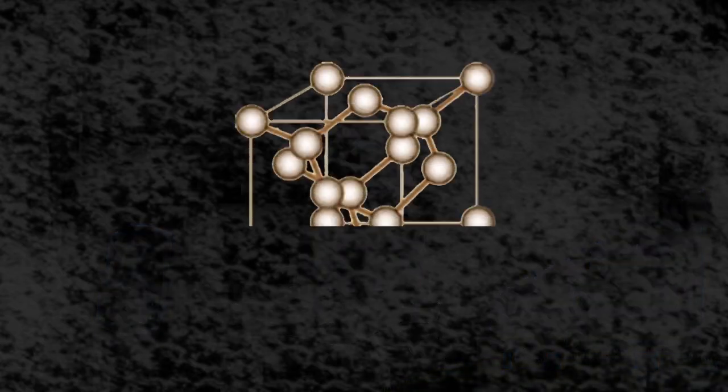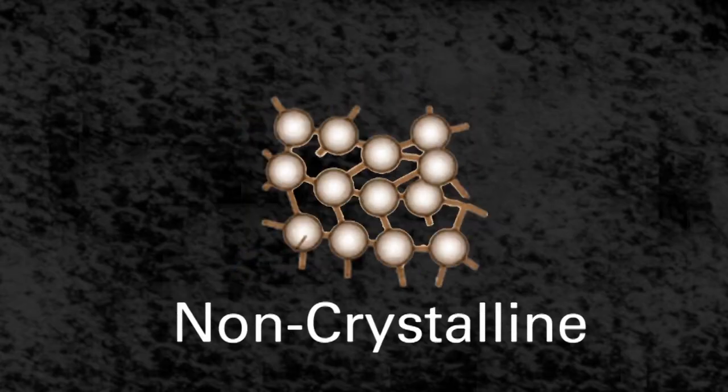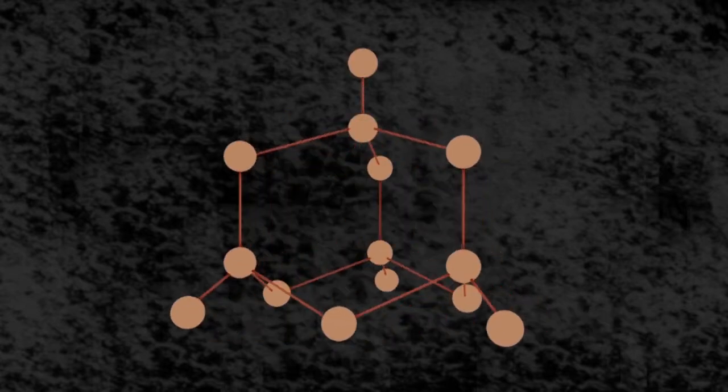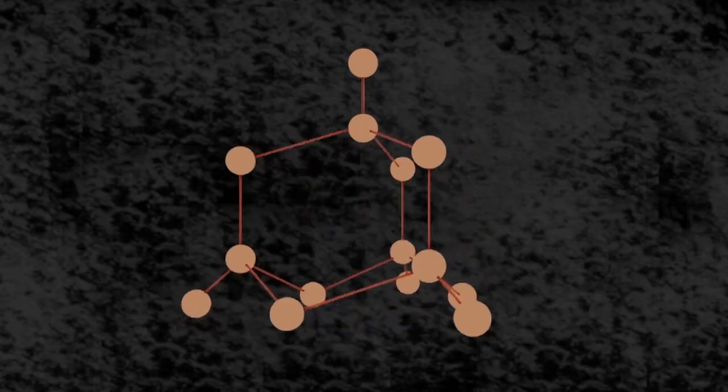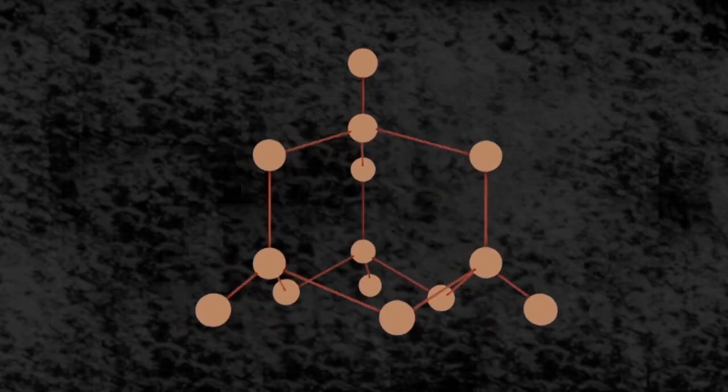Silicon exists in crystalline form and in non-crystalline form, also known as amorphous silicon. In crystalline silicon, silicon atoms are arranged in a tetrahedral structure, with each atom covalently bound to four other atoms.